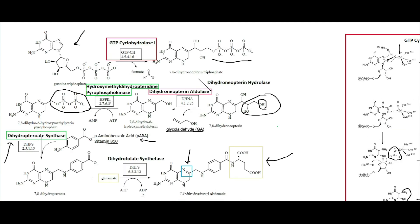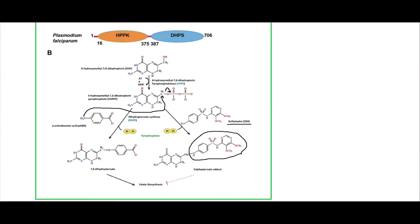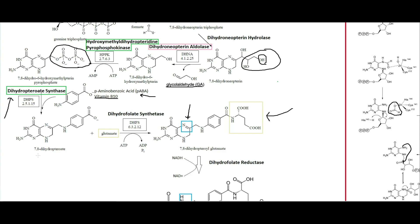As I said, the first step of HPPK is just adding the pyrophosphate onto the molecule. The pyrophosphate acts as a nice leaving group, which makes the second reaction — adding the p-aminobenzoic acid — much more thermodynamically favorable. This is essentially what adding phosphates and pyrophosphates onto molecules is for: making other reactions more favorable.